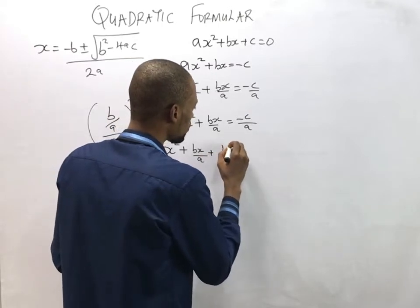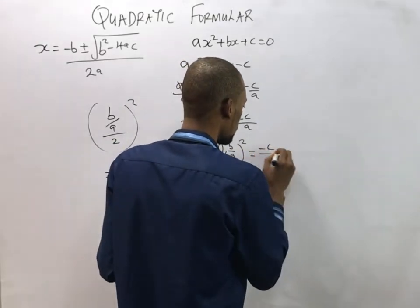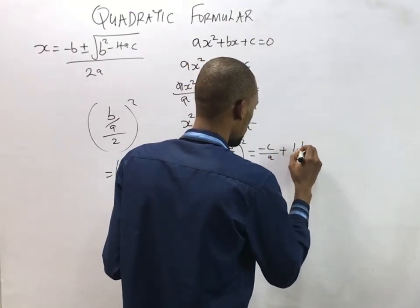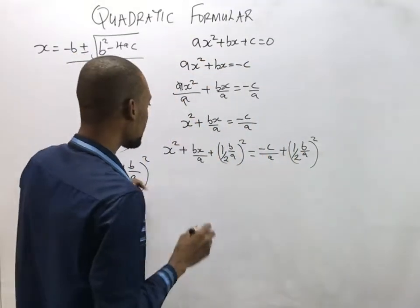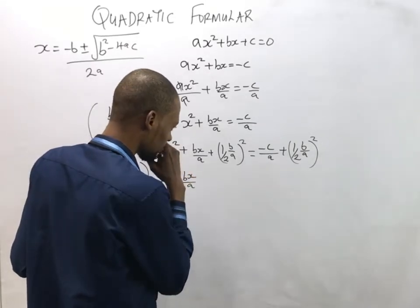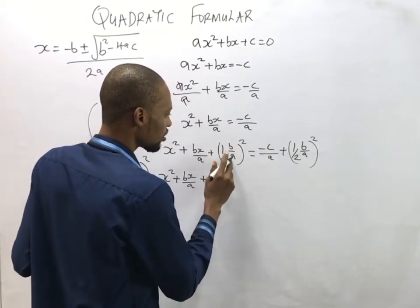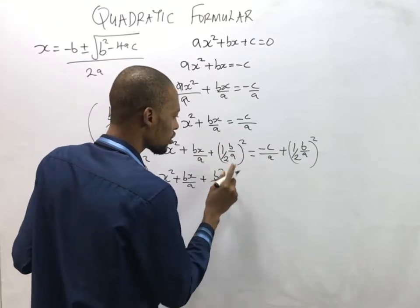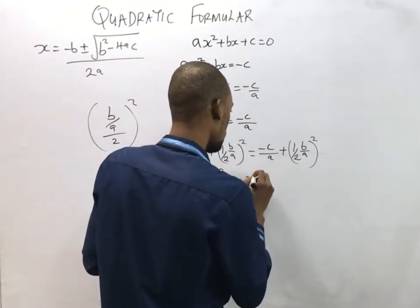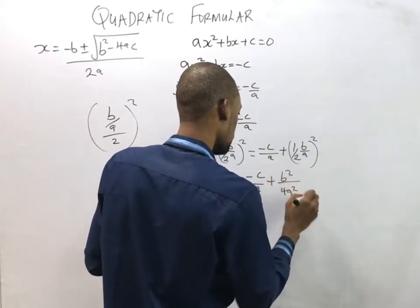In the next step we add (b/2a)² to both sides, giving us: x² plus bx over a plus (b/2a)² equals negative c over a plus (b/2a)². Simplifying, the left-hand side becomes x² plus bx over a plus b² over 4a². On the right-hand side we similarly have negative c over a plus b² over 4a².